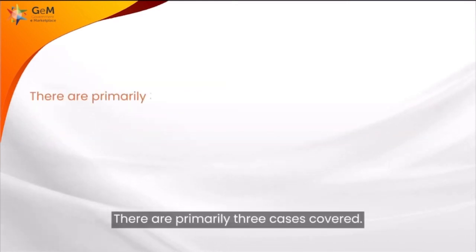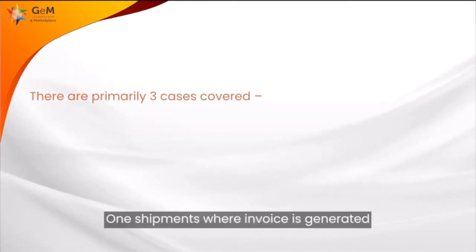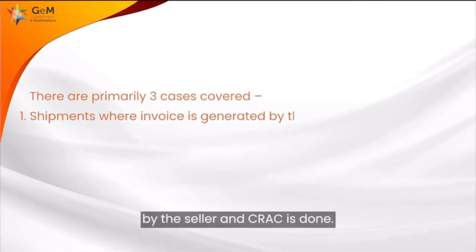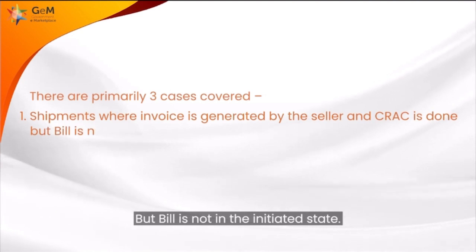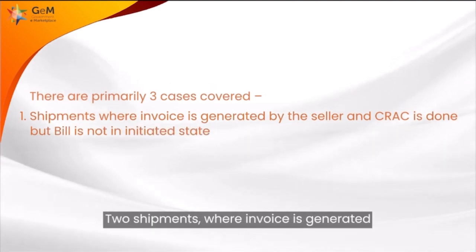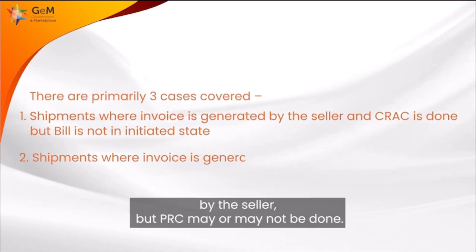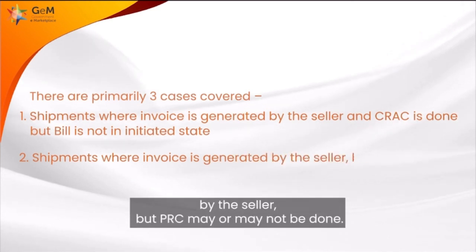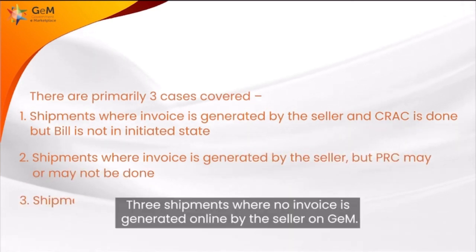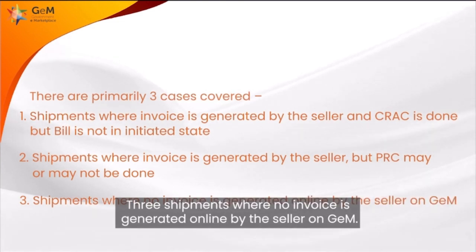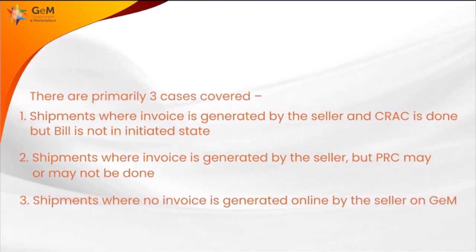There are primarily three cases covered. 1. Shipments where invoice is generated by the seller and CRAC is done but bill is not in the initiated state. 2. Shipments where invoice is generated by the seller but PRC may or may not be done. 3. Shipments where no invoice is generated online by the seller on GEM.